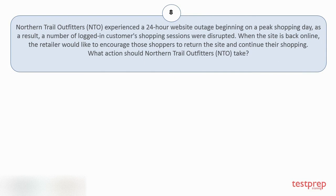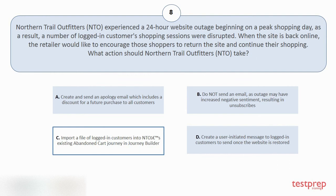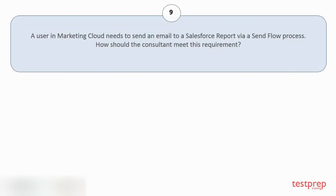Question number eight: Northern Trail Outfitters experienced a 24-hour website outage beginning on a peak shopping day. As a result, a number of logged-in customers' shopping sessions were disrupted. When the site is back online, the retailer would like to encourage those shoppers to return to the site and continue their shopping. What action should Northern Trail Outfitters take? Options: A) Create and send an apology email which includes a discount for a future purchase to all customers. B) Do not send an email, as the outage may have increased negative sentiment resulting in unsubscribes. C) Import a file of logged-in customers into the existing abandoned journey in Journey Builder. D) Create a user-initiated message to logged-in customers to send once the website is restored. The correct answer is option C.